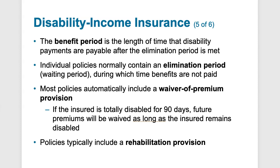The benefit period can range from 5 to 20 years, or until age 65 when Social Security can kick in. Most disabilities are short-term, but some are long-term, making this benefit period important. A shorter benefit period (e.g., 5 years) combined with a longer elimination period (e.g., 180 days) results in relatively cheap insurance. A recommended approach is to get at least 10 years of benefit period and an elimination period of 30 days or less — though that will cost more since payouts are more likely.